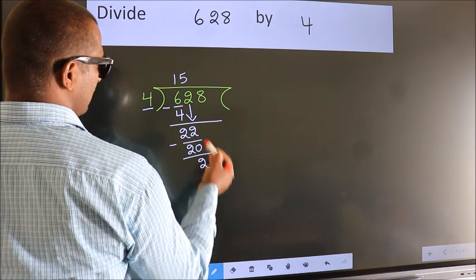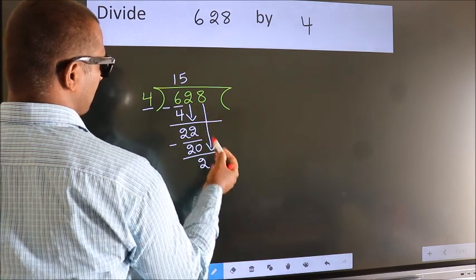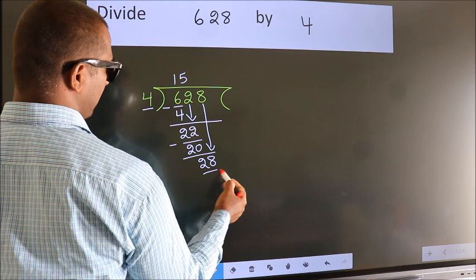After this, bring down the beside number. So, 8 down. So, 28.